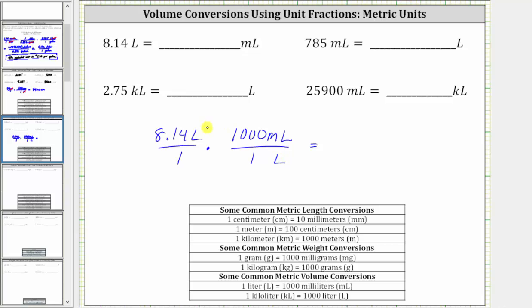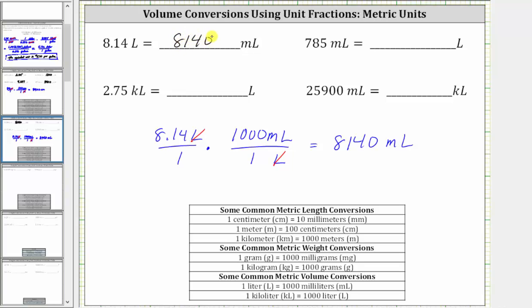Notice now we have liters divided by liters, and therefore the units of liters simplify out, leaving us with milliliters. So now we multiply to perform the conversion. We have 8.14 times 1,000, which is 8,140, and the units are now milliliters. So we know 8.14 liters equals 8,140 milliliters.